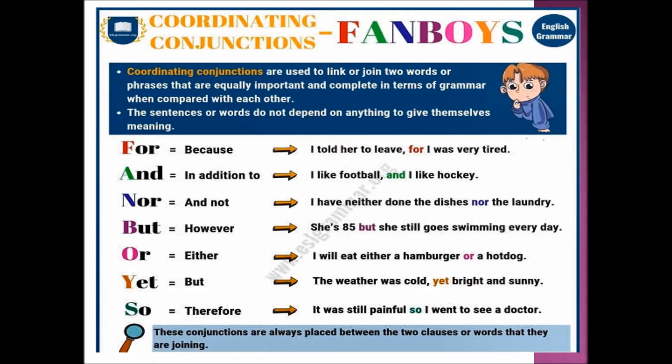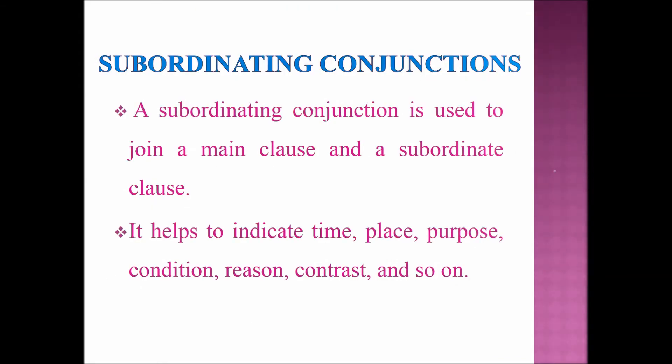Next, we are going to learn about subordinating conjunctions. A subordinating conjunction is used to join a main clause to a subordinate clause. It helps to indicate time, place, purpose, condition, reason, contrast, and so on.